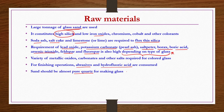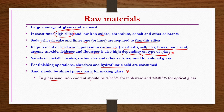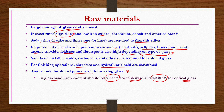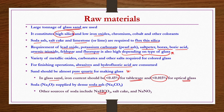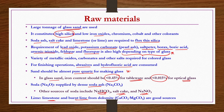Sand should be almost pure quartz for making glass. In glass sand, iron content should be less than 0.45 percent for tableware glasses, and less than 0.015 percent for optical glasses, because higher iron content causes de-vitrification. Soda is supplied by dense soda ash; other sources include sodium bicarbonate, salt cake, and sodium nitrate. For lime, limestone and burnt lime from dolomite (CaCO3·MgCO3) are good sources.